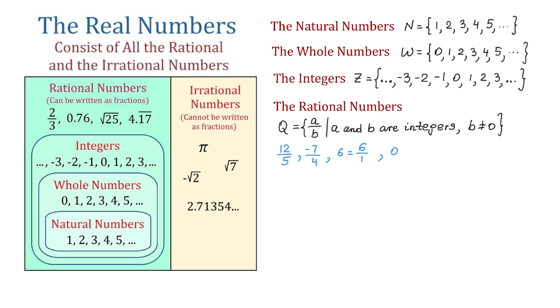0 is also a rational number because we can write it as 0 over any non-zero integer, like 0 over 5. Square root of 16 is also rational because square root of 16 is 4, and we can write 4 as 4 over 1.